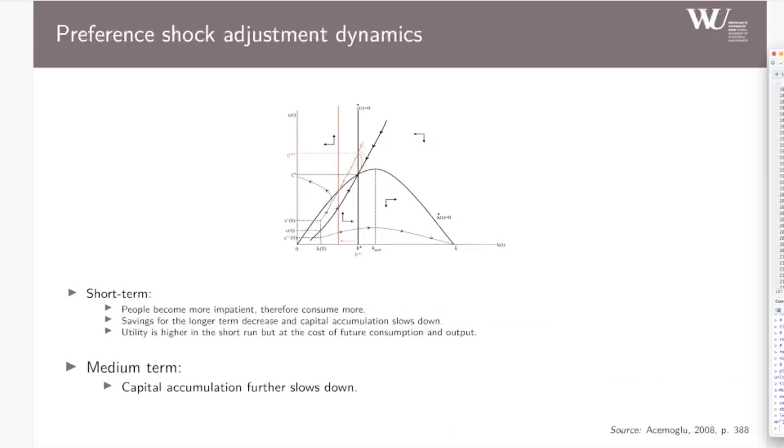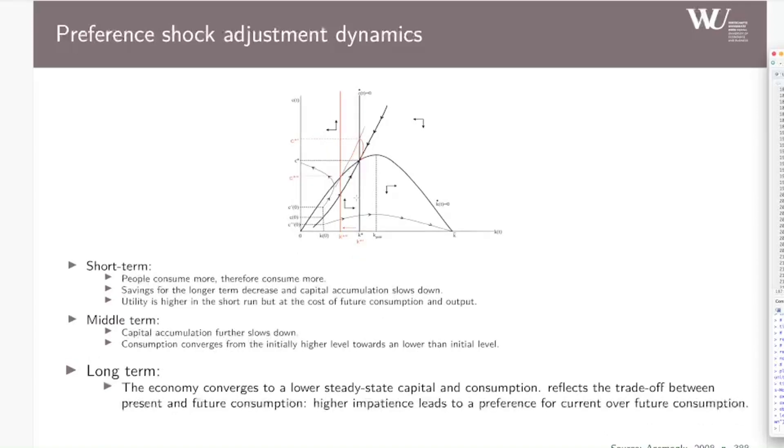Then in the medium term, capital accumulation further slows down and we end up with a consumption that is lower than the initial level. In the long run, then the economy really converges to a lower steady state with lower capital and consumption per unit of effective labor. High impatience leads to a preference for current over future consumption, and longer-term growth decreases.